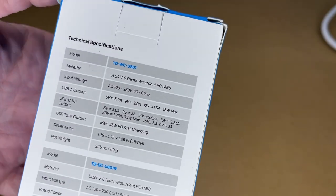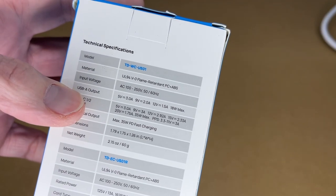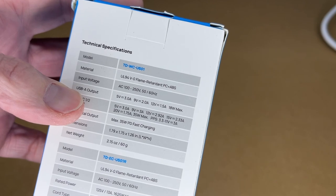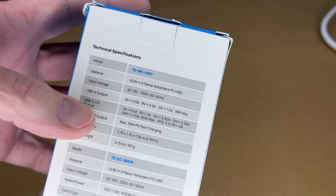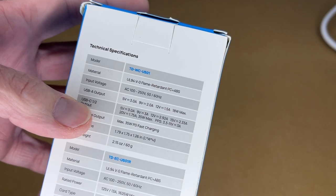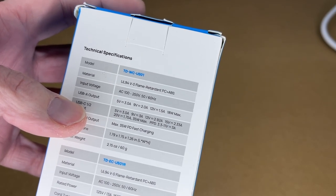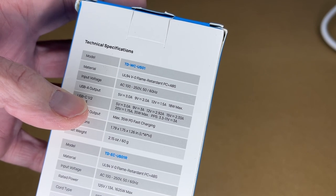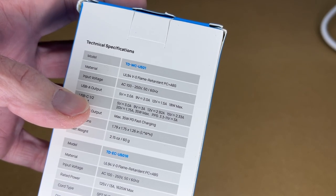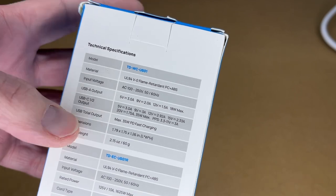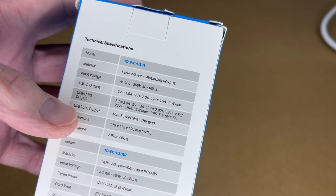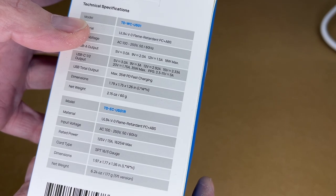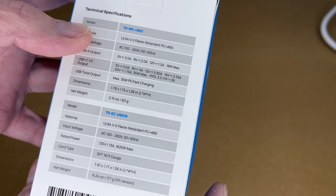On the back we have more specs. The USB-A output is 5 volts at 3 amps, 9 volts at 2 amps, or 12 volts at 1.5 amps for 18 watts max. The USB-C 1 and 2 output is 5 volts at 3 amps, 9 volts at 3 amps, 12 volts at 2.92 amps, 15 volts at 2.33 amps, 20 volts at 1.75 amps for 35 watts max. The total output is max 35 watt PD fast charging. The rated power for the extension cord is 13 amps or 1625 watts max.